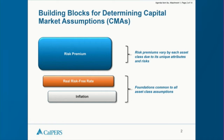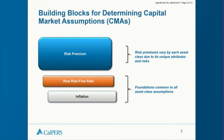For example, for public equity you have inflation plus risk-free plus equity premium. For private equity, you add an illiquidity premium because private equity is less liquid than public equity. This approach offers theoretical elegance, but in practice it's difficult to estimate each component as well as the correlation among them.